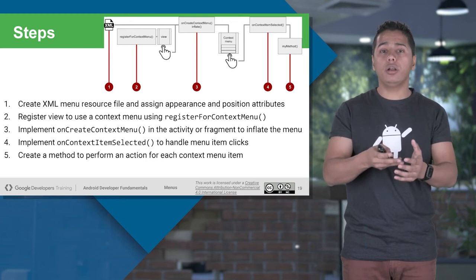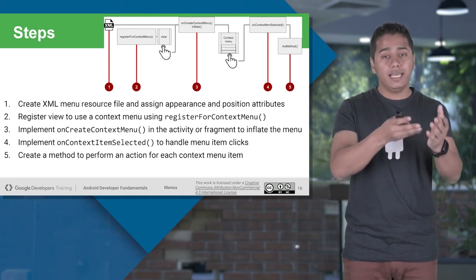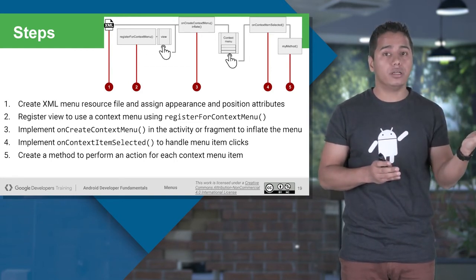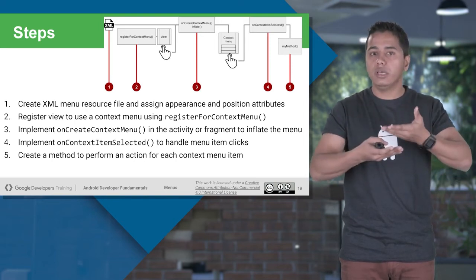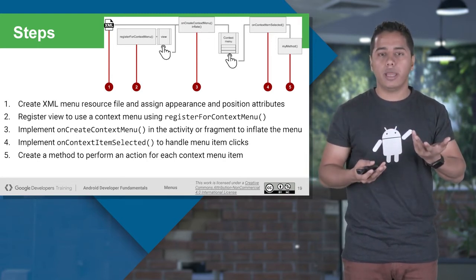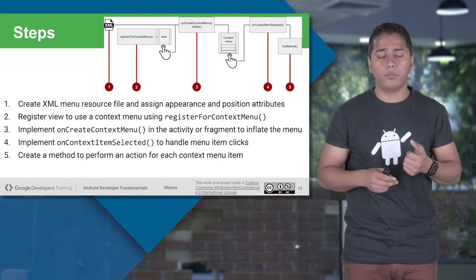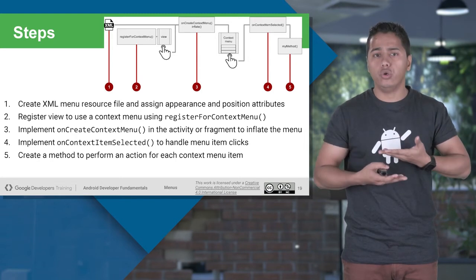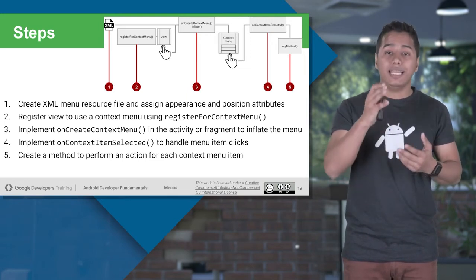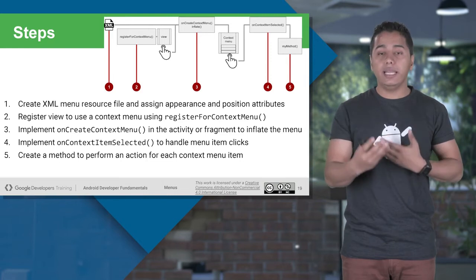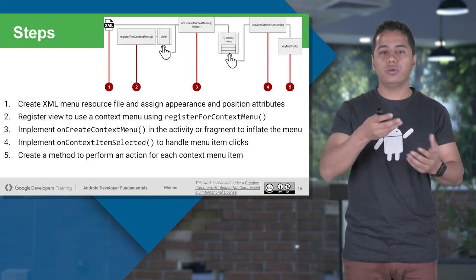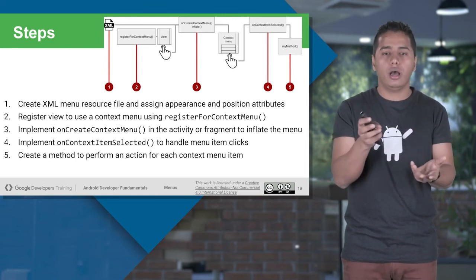Once you register the view, you need to override a method known as onCreateContextMenu. Inside this method, you inflate your menu XML file from the menu folder inside the res folder. This will show the context menu whenever you long-click on your view or EditText. But this only shows the menu — to handle it, you have to override a method known as onContextItemSelected. Inside onContextItemSelected, you can distinguish between different menu items using a switch statement and handle them differently.